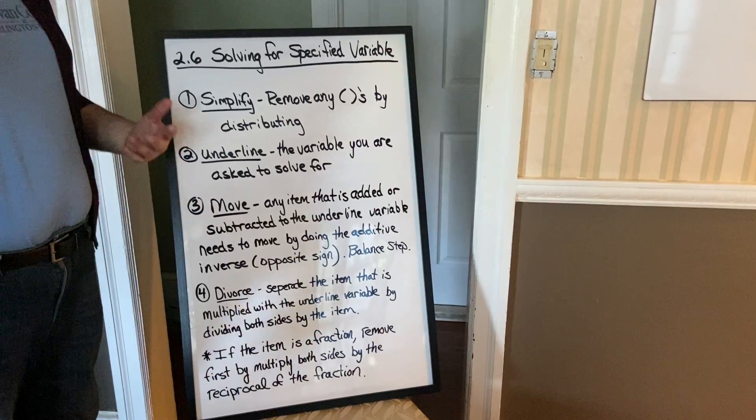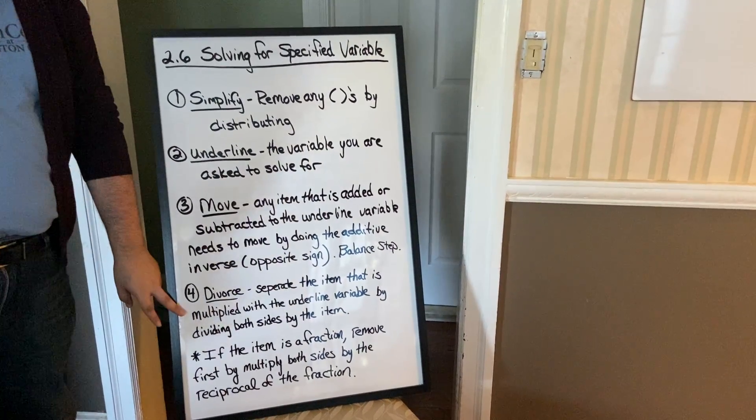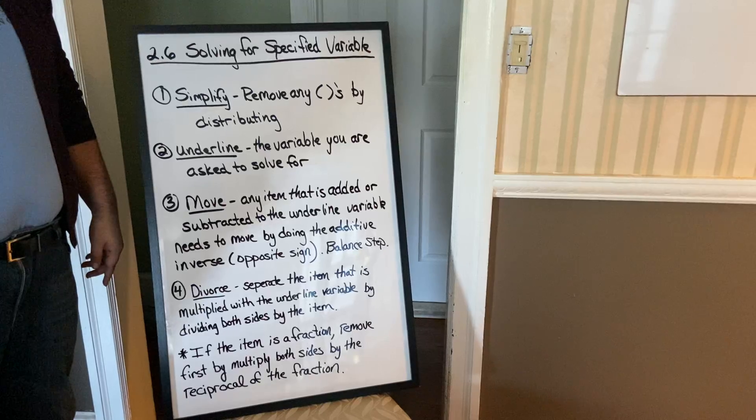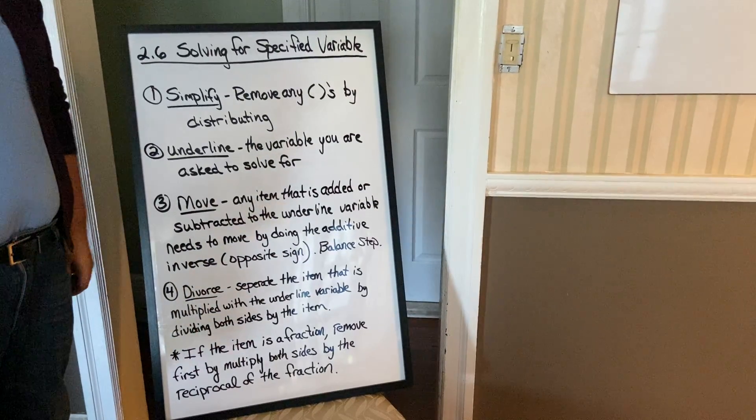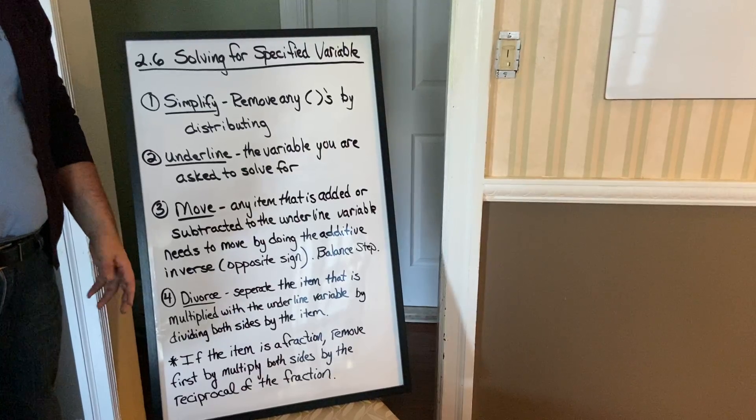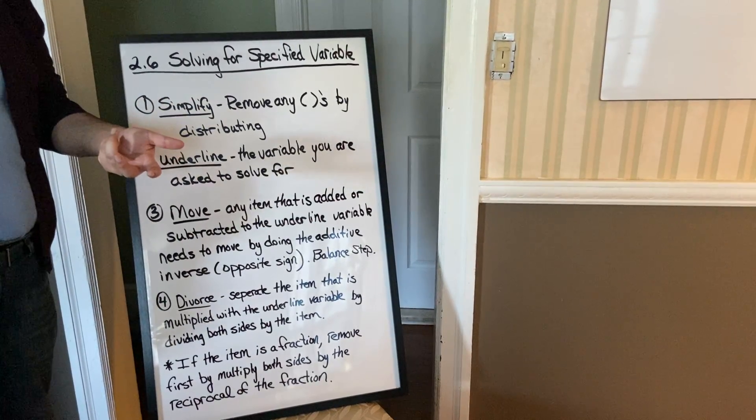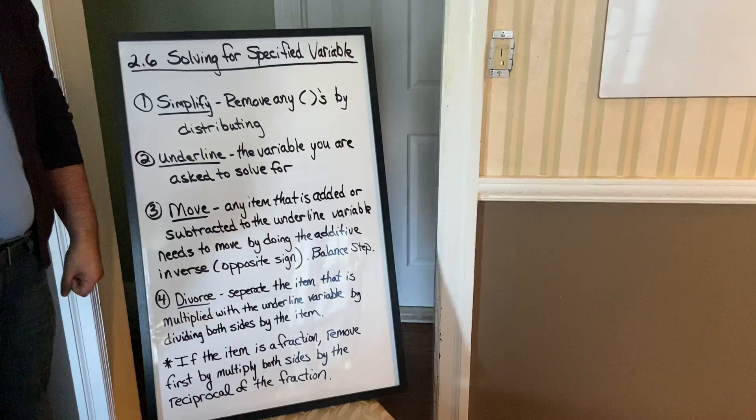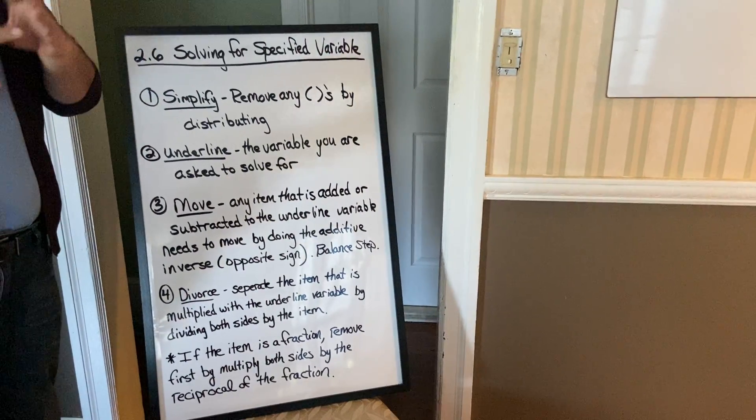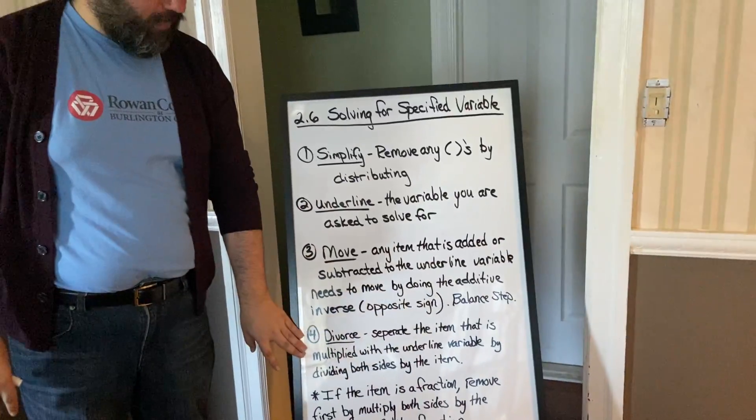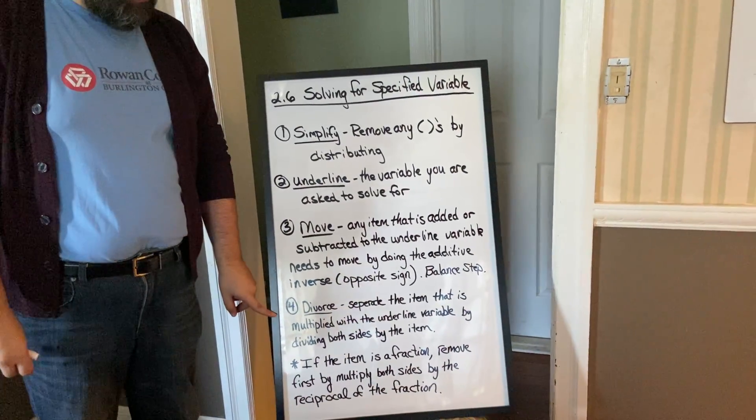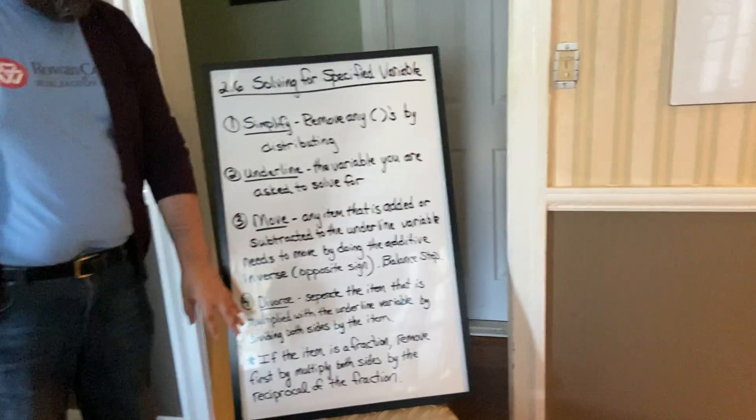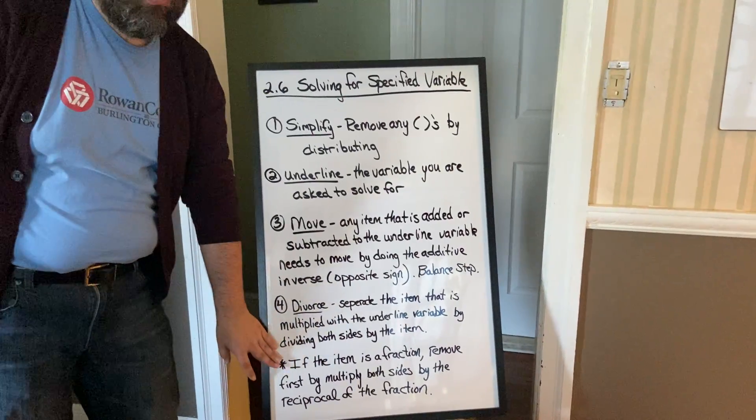Because here, the question we have on the board has no numbers. So, what you would do is you would divide both sides by that item. If the item is a fraction, then you want to remove that first. And you remember how to remove fractions. When they're like coefficients, you just do the reciprocal. Sometimes, we might have a fraction and a regular item. So, I'll show you that where you're going to move the fraction first and then take care of the other thing that is multiplied. So, sometimes you might have to do the divorcing step into two steps.